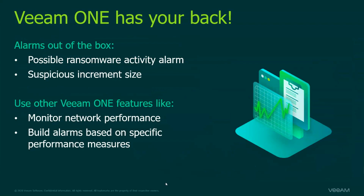The next alarm is the suspicious increment size alarm, and that's really going to take a look at your backup jobs. Basically, with Veeam, when you create a backup job, that first run is going to be the active full, and then it creates increments. This alarm takes a look at your increments and sees if the incremental was way larger than its previous backup. That could be a sign that ransomware might have been installed on that virtual machine and is causing the increment to be quite large — like you just backed up some virus. There are also a lot of performance charts in Veeam One to help you monitor network performance, and you can build alarms based on specific performance measures as well.